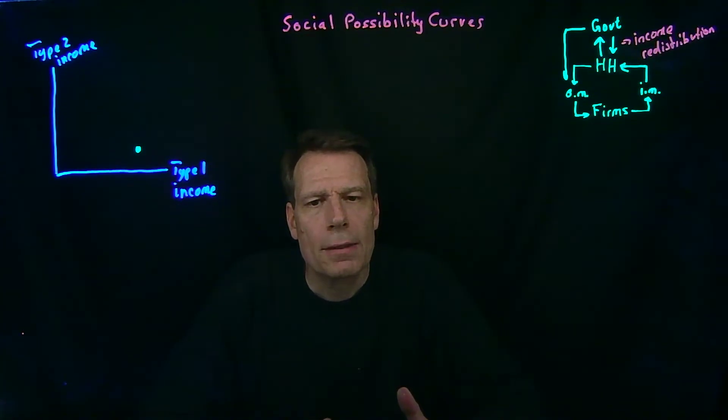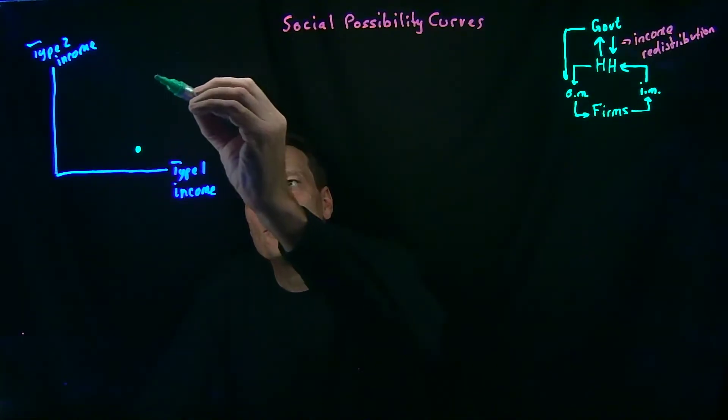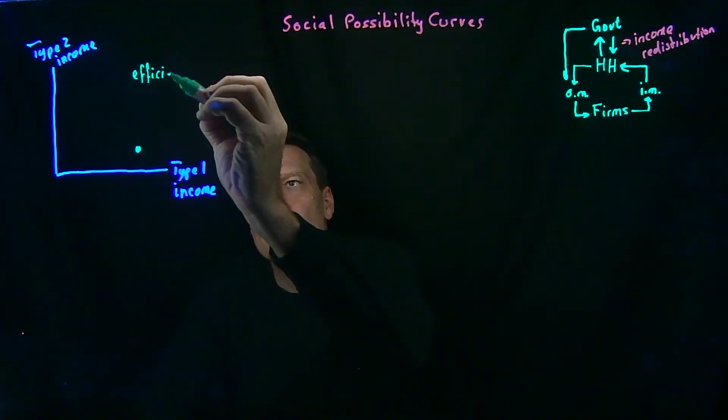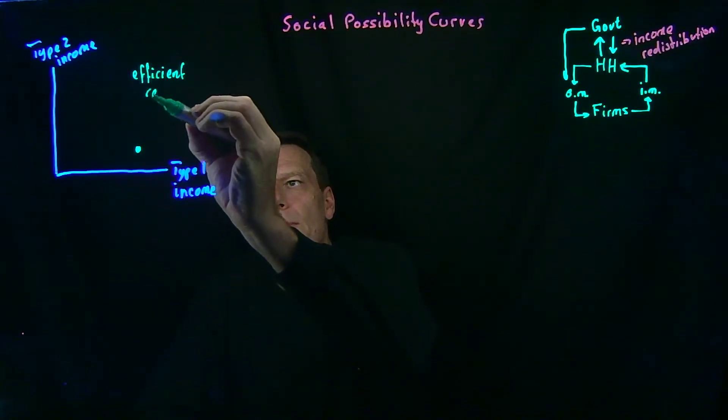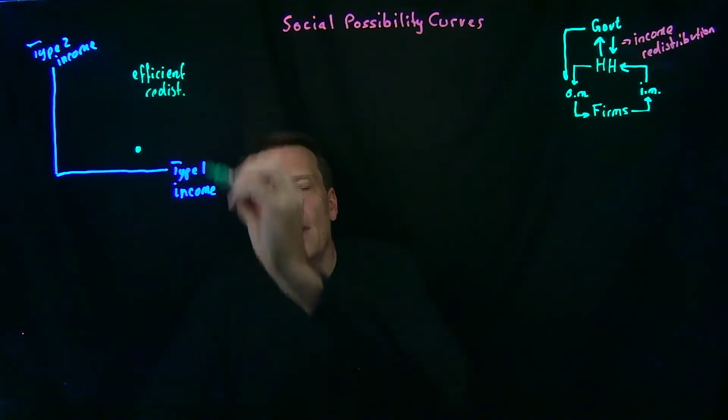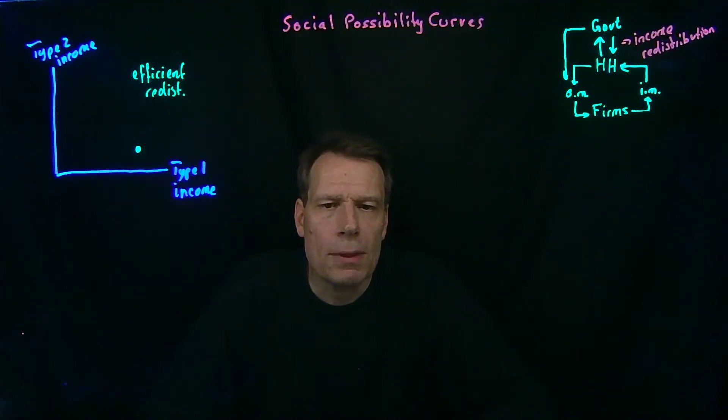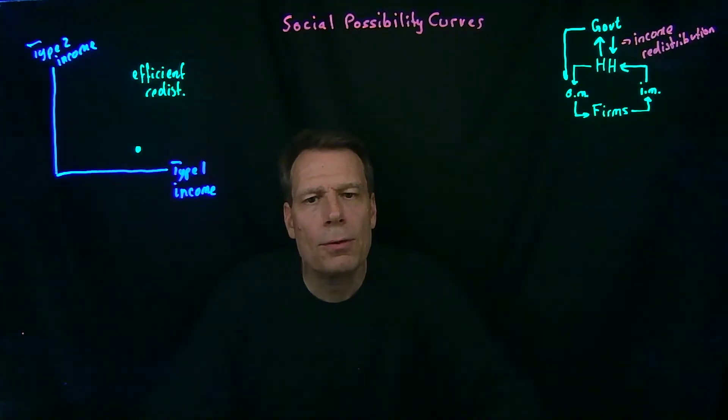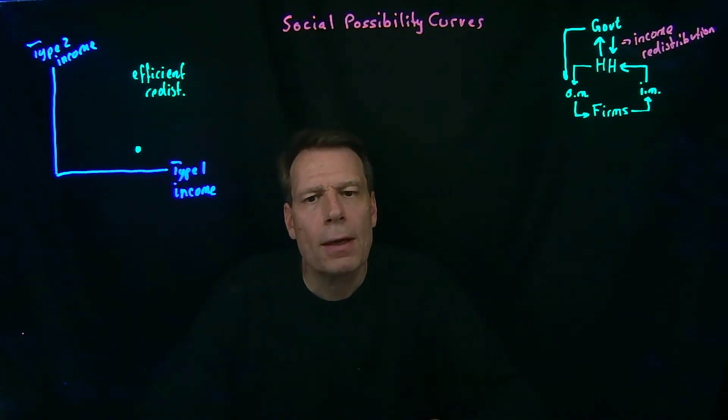Now we can ask, what would the social possibility curve look like if we redistribute it? And we'll begin by assuming that we can use efficient redistribution. By efficient redistribution, we mean that we can take a dollar from one person and give that whole dollar to another person. We lose nothing in the process. In that case, it's pretty easy to figure out what the social possibility curve would look like.